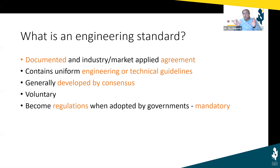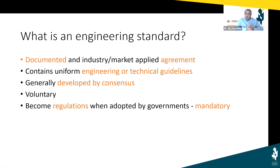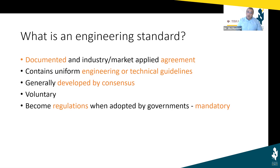Standards are voluntary — created by voluntary organizations like ASTM. As soon as they are adopted by governments, they become codes, they become mandatory and regulatory. So let me explain it one more time: standards are documented agreements which are voluntary. However, once they become part of a government's requirement, then you call them regulations or codes.